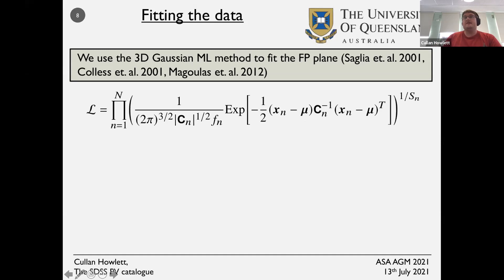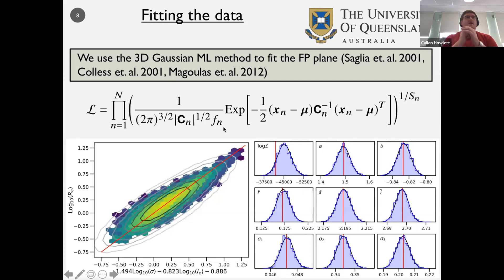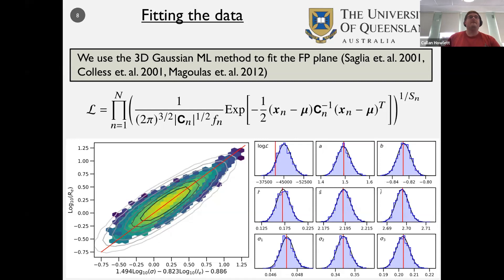We also weight the likelihood to account for missing galaxies below our magnitude limits. This method works extremely well for fitting the data. Shown here is the best fit fundamental plane from our SDSS data: hex bins show the data points, red is the one-to-one line which is the fundamental plane, and contours represent the average over 2048 mocks. On the right, the distribution of fundamental plane parameters from both data and mocks shows the method reproduces the input to the mocks very well.